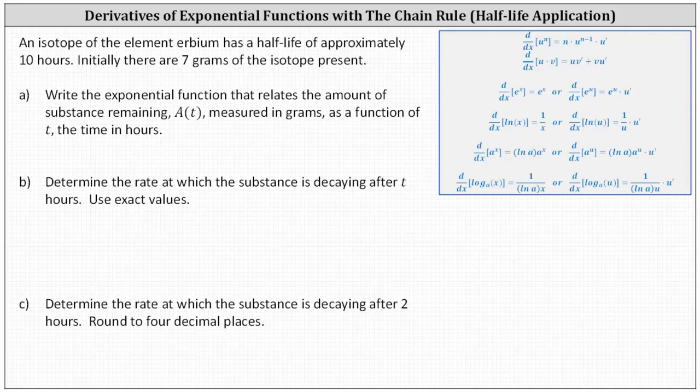An isotope of the element erbium has a half-life of approximately 10 hours. Initially, there are seven grams of the isotope present. Part A: write the exponential function that relates the amount of substance remaining, A of t, measured in grams as a function of t, the time in hours.